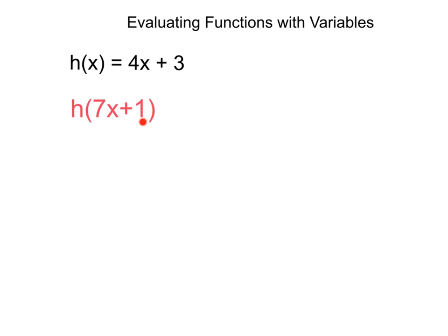Here we have h(7x + 1). It doesn't matter how complicated whatever's inside these parentheses is, it's always the same thing. We're just going to take that value and substitute it in for x. That's going to give us 4 times (7x + 1),